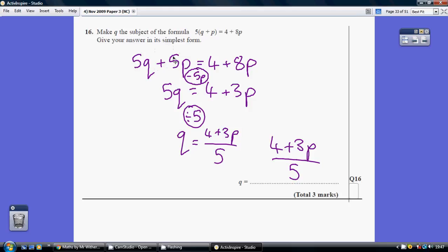So how do we undo a plus 5p? We take away 5p, so we get 5q equals 4 plus 3p.